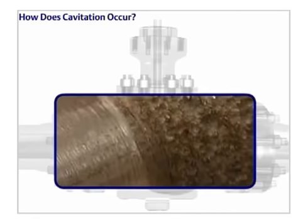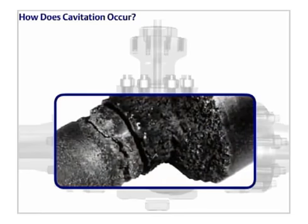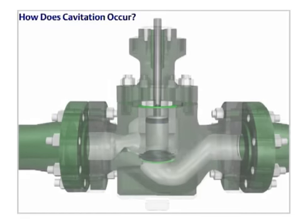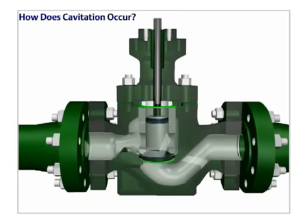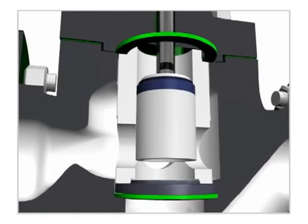Cavitation is a major source of damage in control valves and other components. Cavitation occurs as a liquid passes through a restriction, such as a valve. The restriction causes the liquid's velocity to increase and its pressure to decrease.